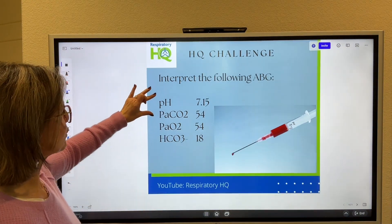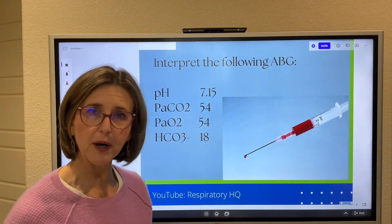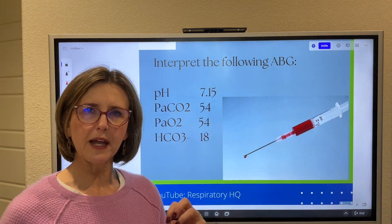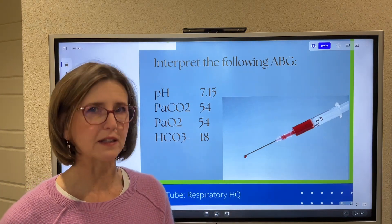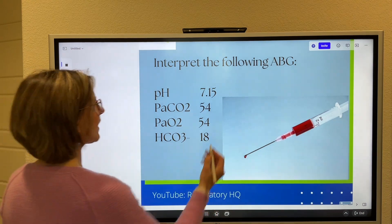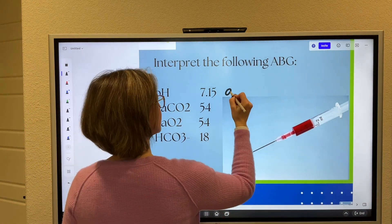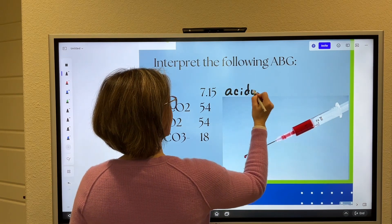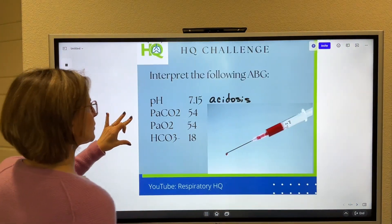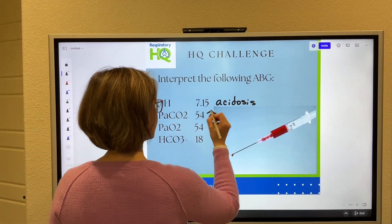The first thing I do when I interpret an ABG is I label all the components of it. What I'm really meaning is I'm labeling the acid-base balance components at first. So a pH of 7.15 is an acidotic pH, so we have an acidosis going on. The CO2 — and I use arrows here — the CO2 is elevated.